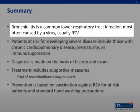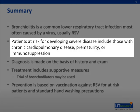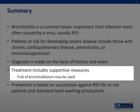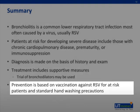In summary, bronchiolitis is a very common lower respiratory tract infection, most often caused by a virus — usually RSV. Patients at risk for developing severe disease include those with chronic cardiopulmonary diseases, premature infants, or patients who are immunosuppressed. Diagnosis is made on the basis of history and physical exam, and treatment generally includes supportive measures, although a trial of bronchodilators may be used. Prevention is key and is based on vaccination against RSV for at-risk patients and standard hand washing precautions.